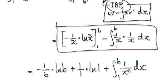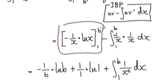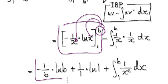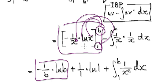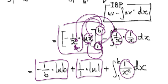Now let's evaluate it. Put b into here and into here — that gives you this. Then take away: put 1 into here and into here — that gives you this. Tidying up, you get one term multiplied by another, giving you this.